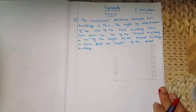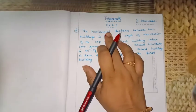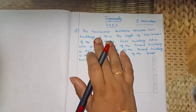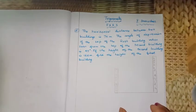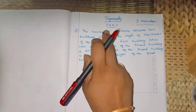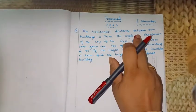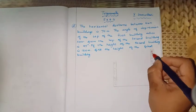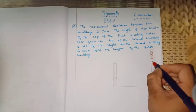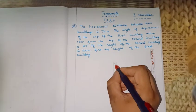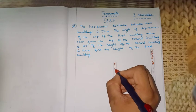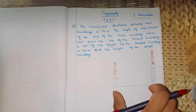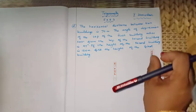Welcome students to my channel. This is a trigonometry exercise 6.3 problem. The question states: the horizontal distance between two buildings is 70 meters. We have a first building and a second building, and we are given the height of the first building.